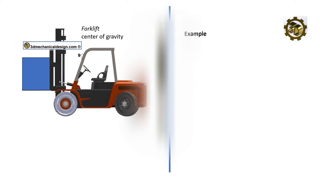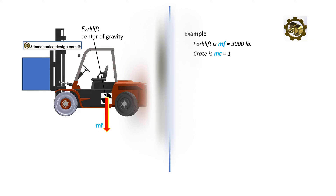Problem Statement. We have a forklift with the following specifications. Forklift mass, MF, equals 3,000 pounds. Crate mass, MC, equals 1,500 pounds.